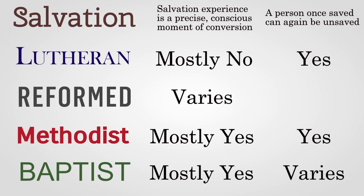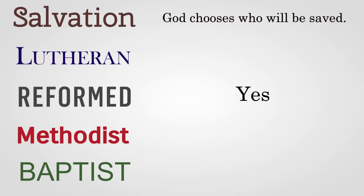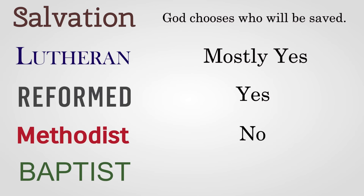Reformed churches have varied: some have been more Lutheran in not emphasizing a moment of saving faith, and others do. They also teach perseverance of the saints — that a person God has chosen for salvation cannot forfeit it. That chosen-to-salvation concept is distinctively Reformed: Reformed theology teaches that God chooses who will be saved, those will certainly be saved, and those not chosen will certainly not be. All people don't have the free ability to decide whether to accept Christ. Lutherans mostly agree, the main difference being a distinction between predestination, which they affirm, and double predestination, which they deny. Methodists deny that any person is unable to choose to believe on Jesus and be saved, and most Baptists believe all people can freely choose to accept or reject Christ, though Reformed Baptists hold the Reformed position.